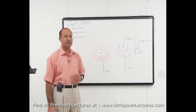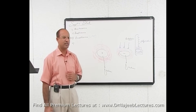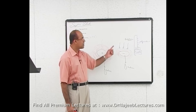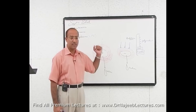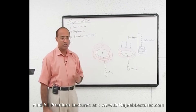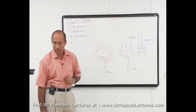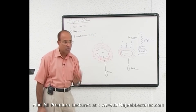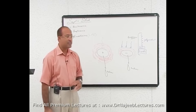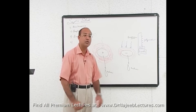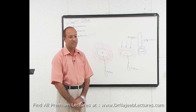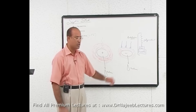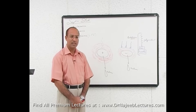One more important point: the structure of endotoxin is lipopolysaccharide, while the structure of exotoxin is a protein.